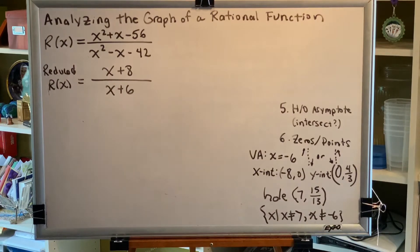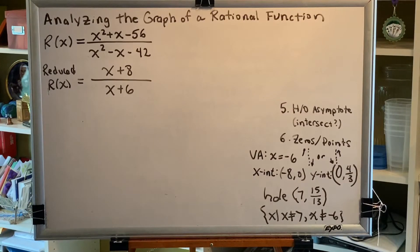So when we perform step 5, we take note of the fact that we are using our reduced r to find the horizontal or oblique asymptote if one exists.